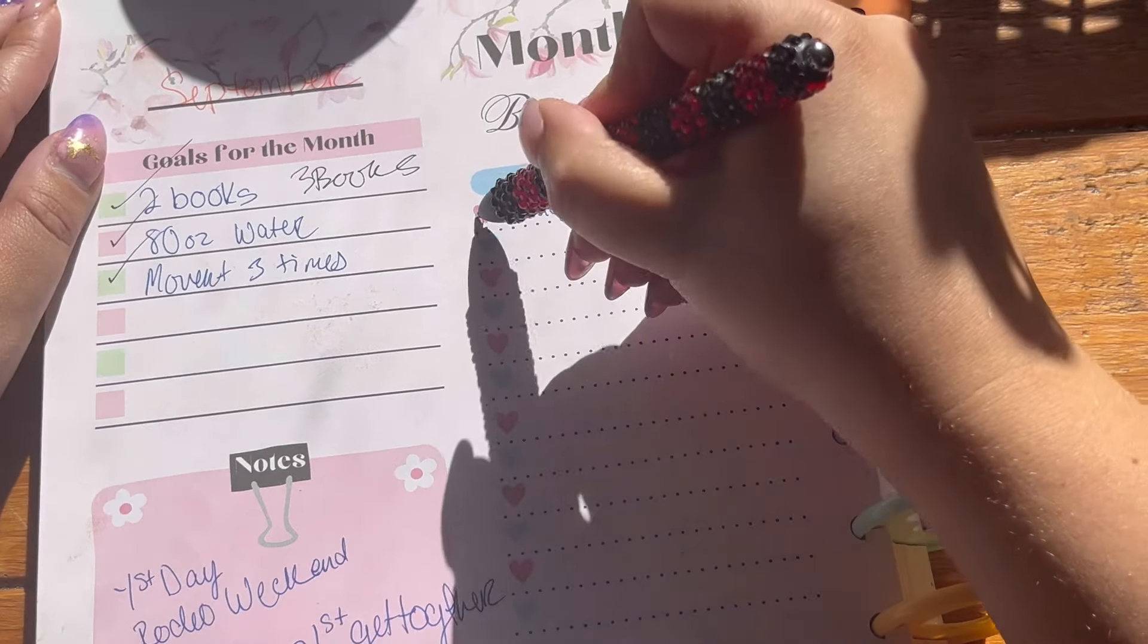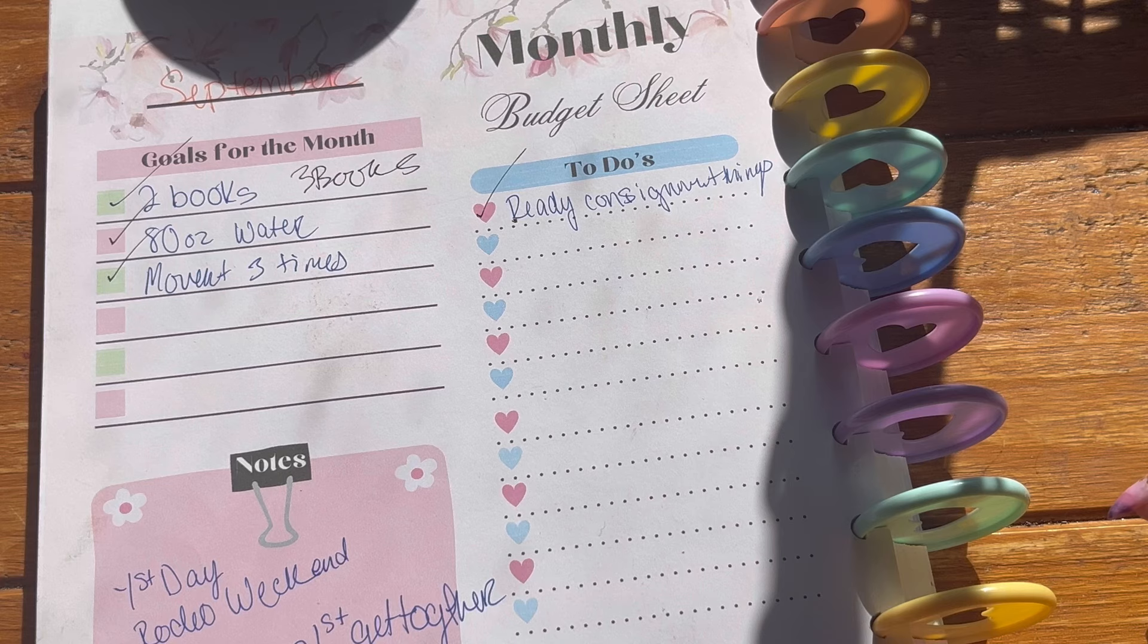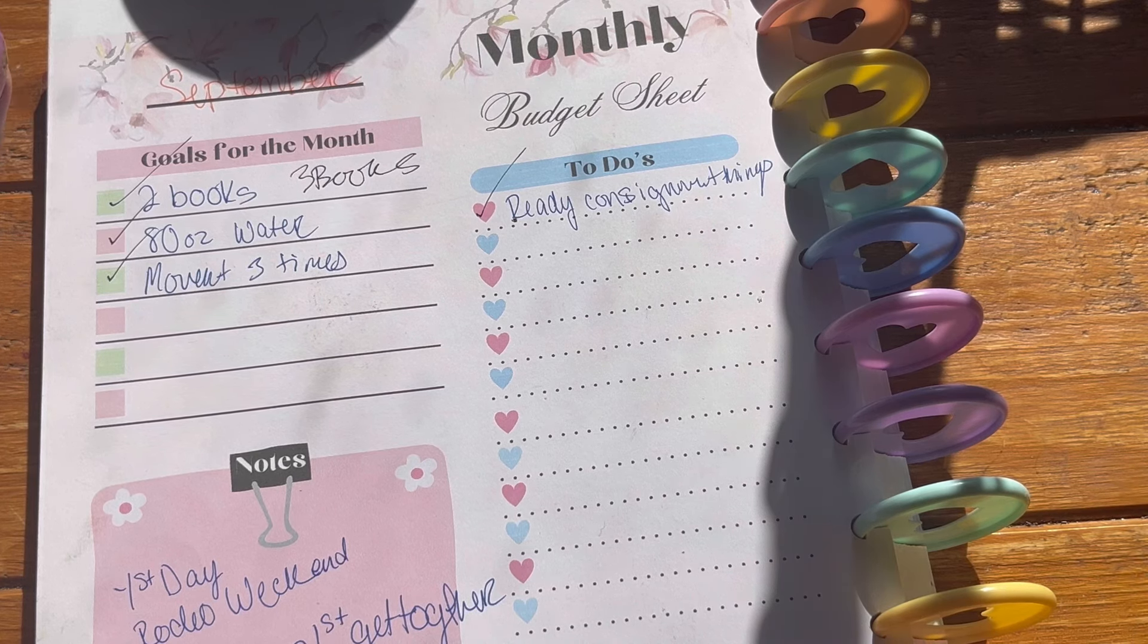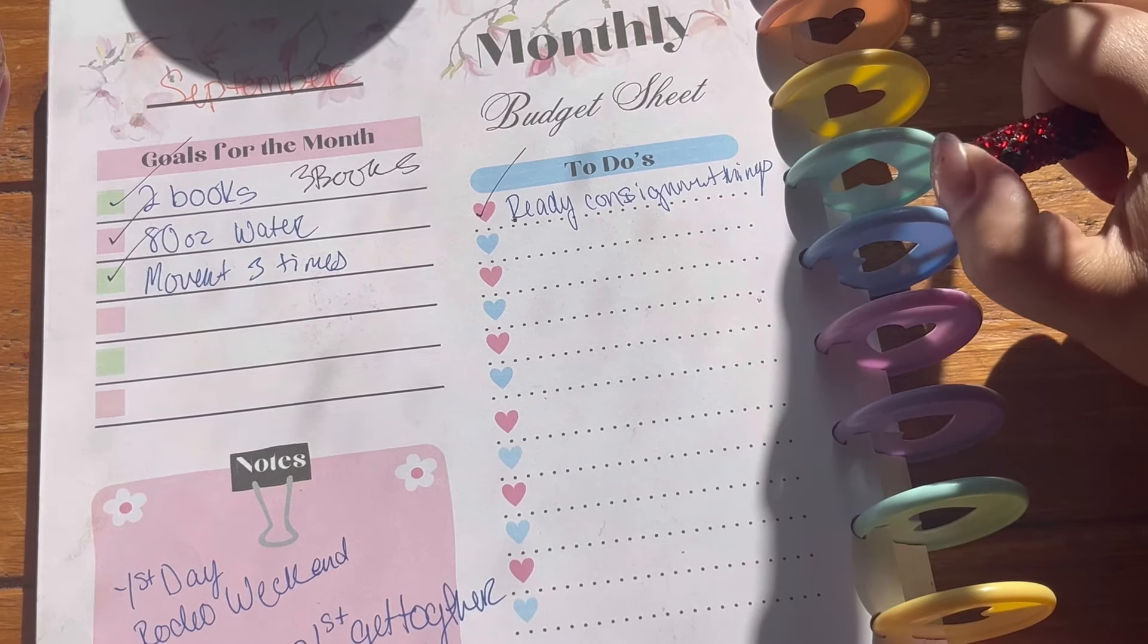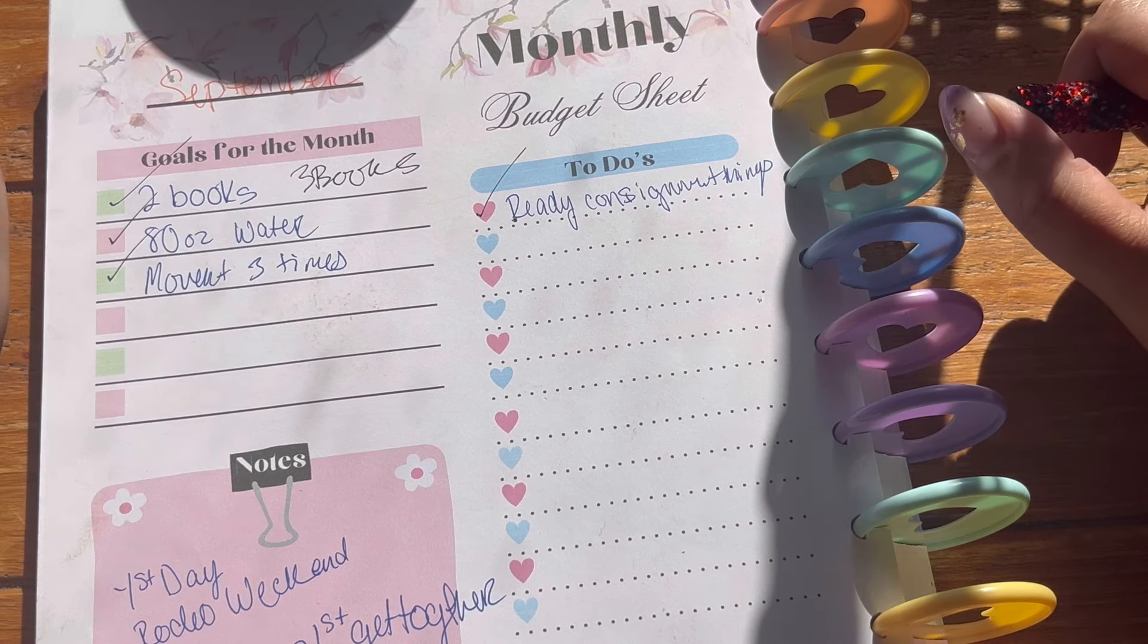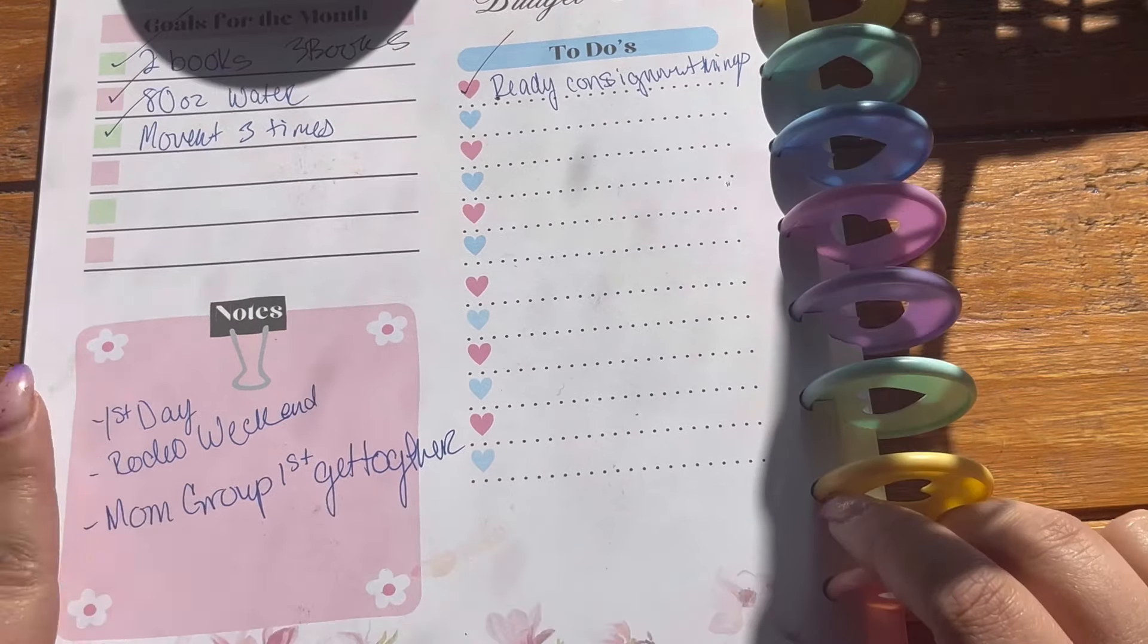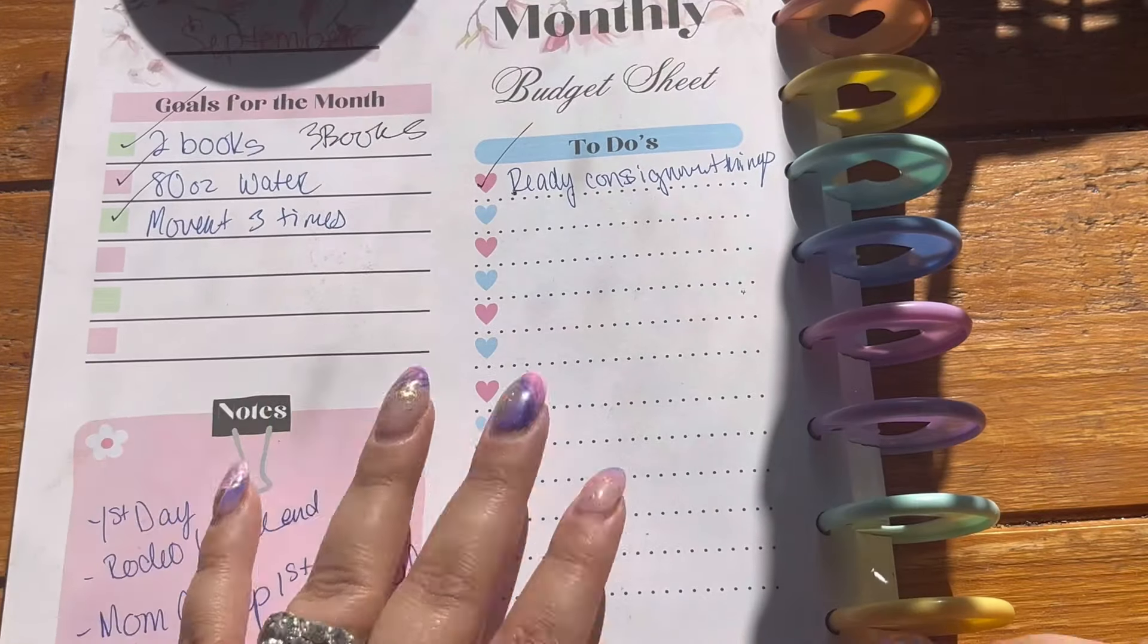So I actually did get everything ready for the consignment sale. So I just picked everything up actually the day before I'm filming this and it ended up being, I didn't sell as much, but they had a ton of consigners, so there was actually a lot of stuff left over. So I think I made roughly like $100, which is lower than most years, but that's okay. And you know, we had a great month. It was a busy month, but it was a good month.